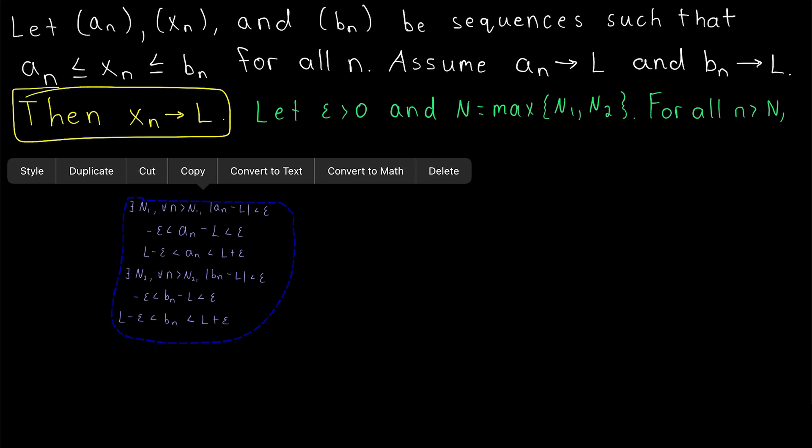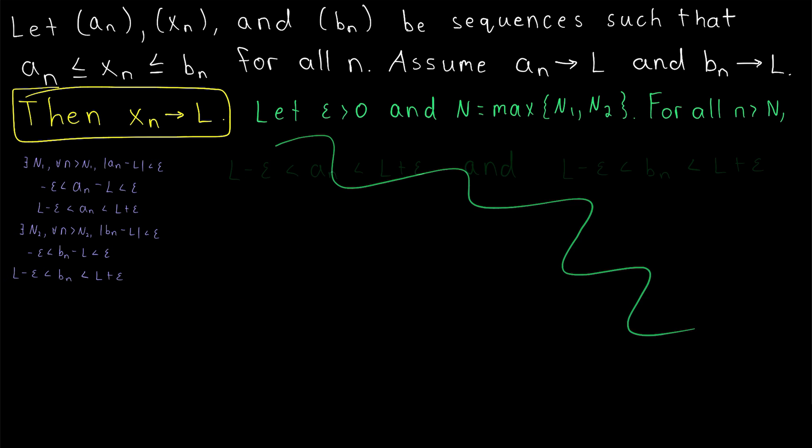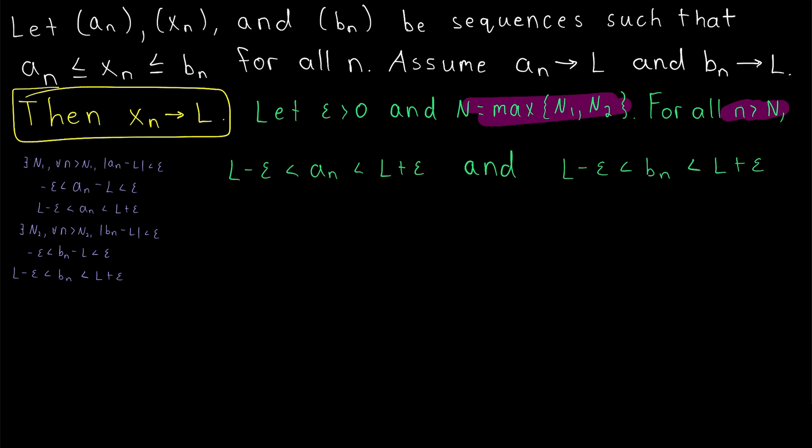I'm just going to shrink this and set it to the side though, so we have some more room to work with for the rest of the proof. So by the work we already did, we know that for all n greater than big N,